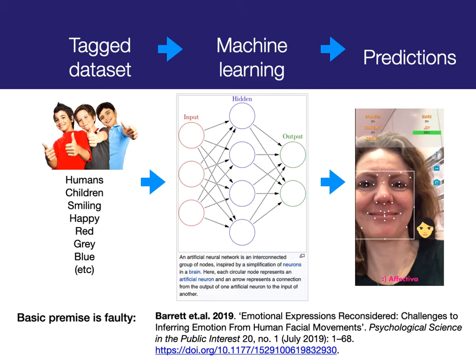Joy Buolamwini's poem shows how emotion recognition and facial recognition can have really deep emotional and cultural impact on people. Here's another example: emotion recognition. What this does is it plots the expression on your face and predicts what your emotion is. These systems are used, for instance, in schools in China and Australia, where it reads the faces of all the students — the ones not paying attention, smiling, or looking tired are marked as having spent a certain percentage of time not paying attention, and messages are sent to their parents based on this.